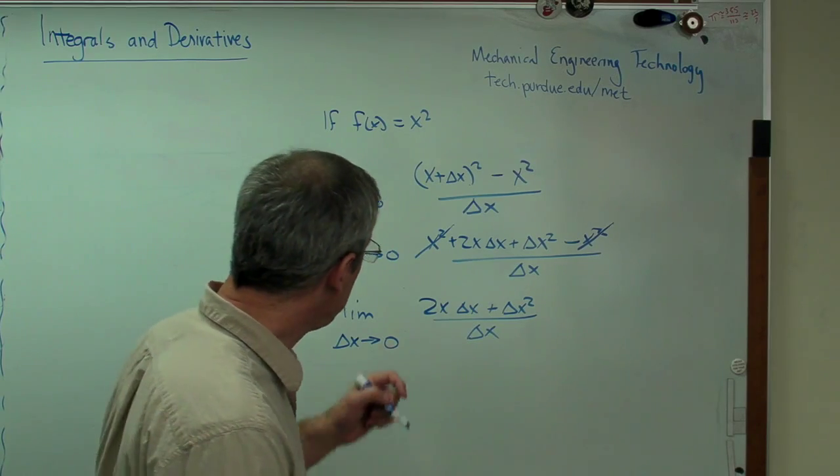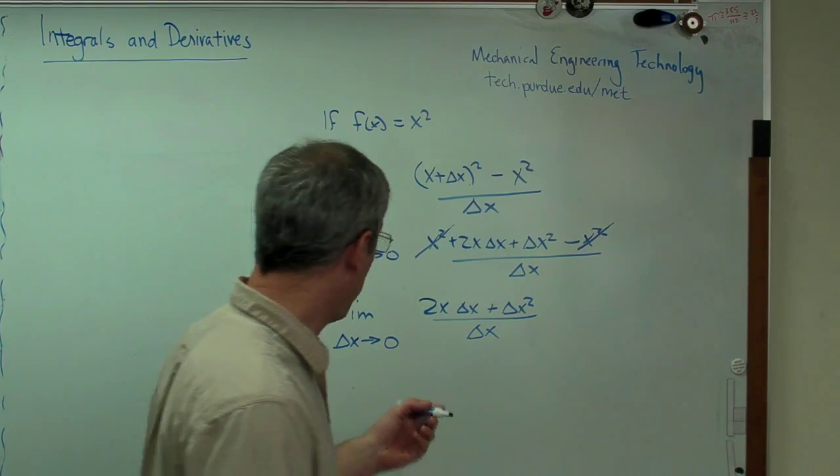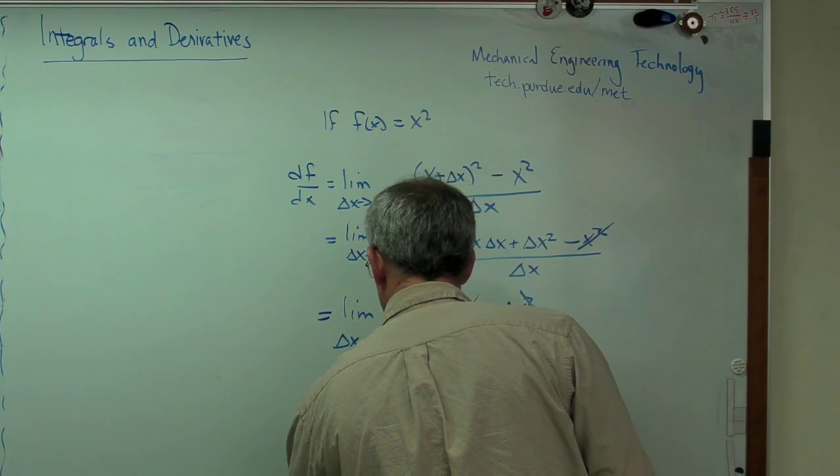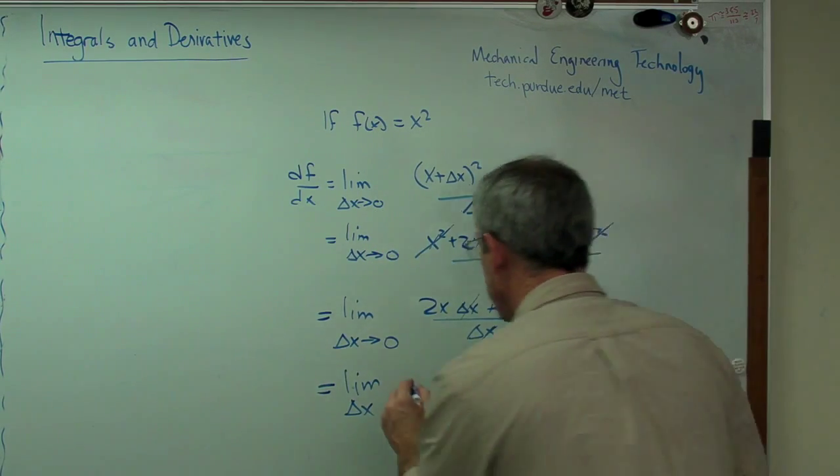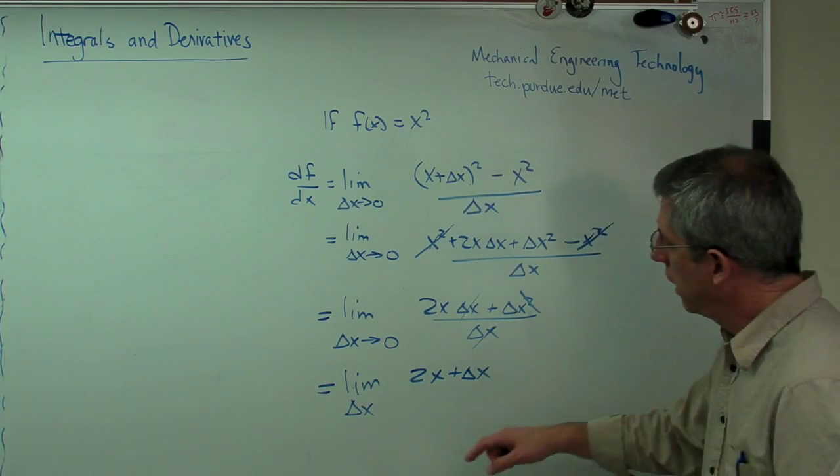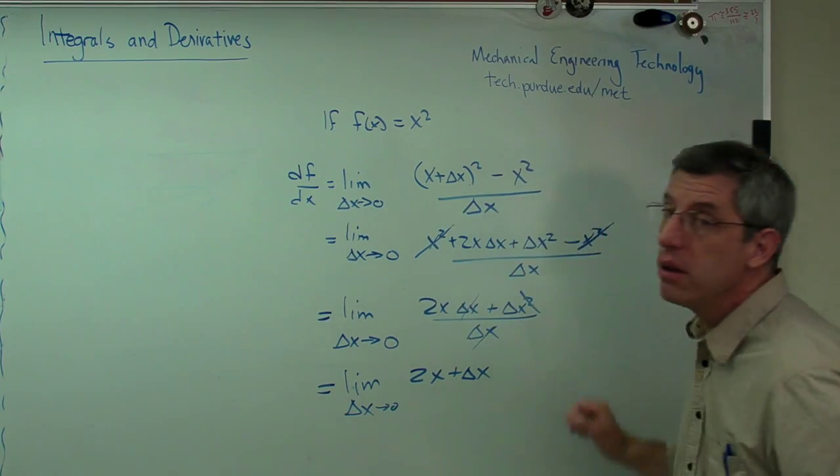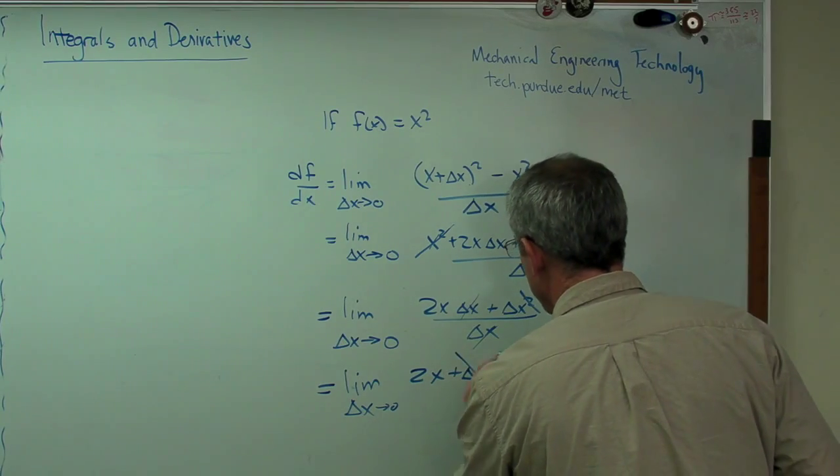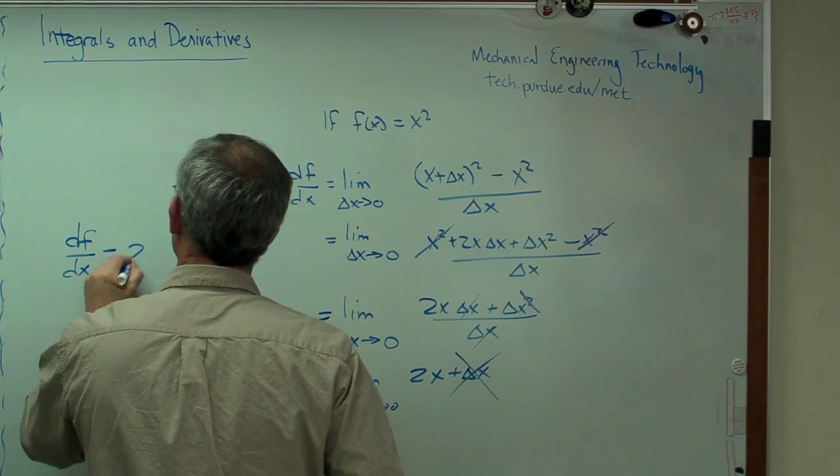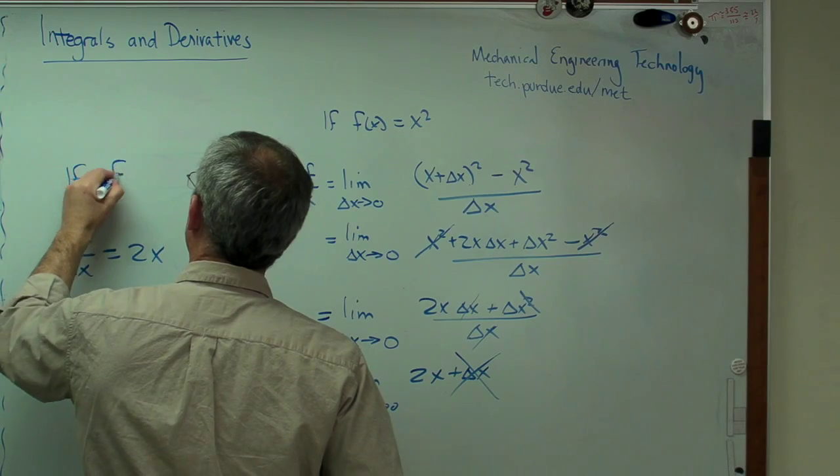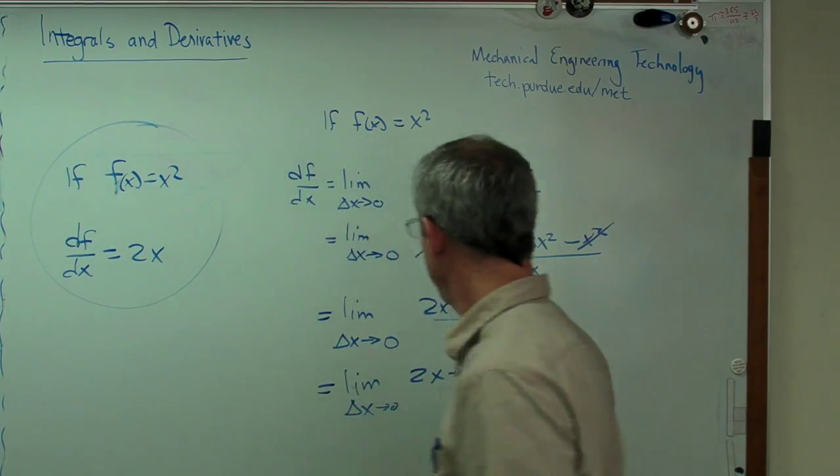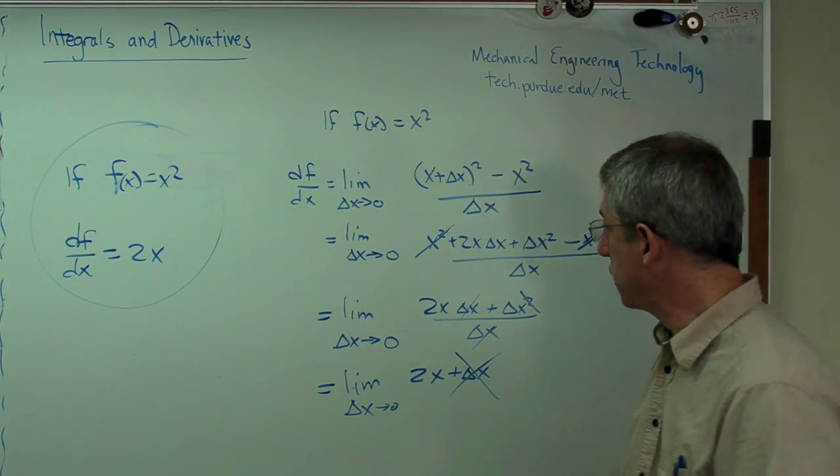So I can divide through by delta x if I want. So that goes away. That goes away. That x squared goes away. And in frame here. That gives me 2x plus delta x. Well, if that goes to arbitrarily close to zero, but not exactly zero, this becomes so small I don't care anymore. And from there I just showed that df dx equals 2x if f of x equals x squared. That's what we just showed. We kind of knew that, but it's good to know where it comes from.